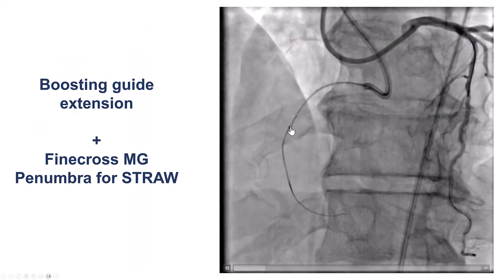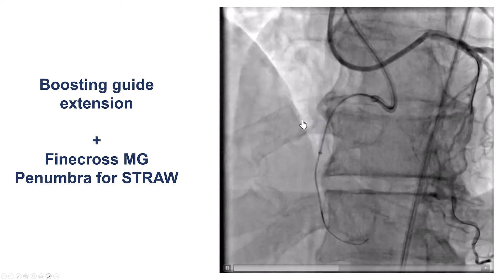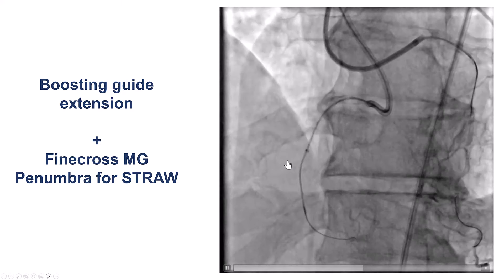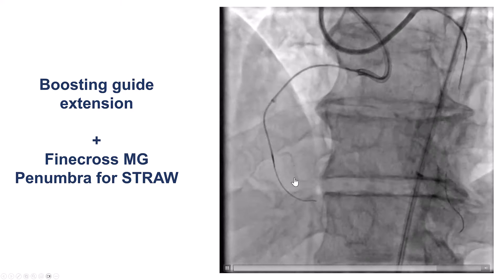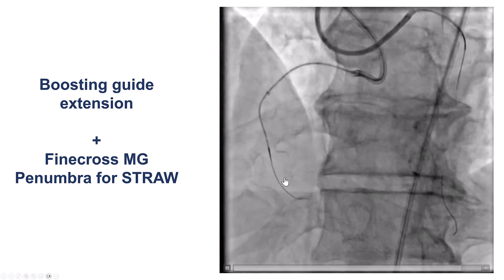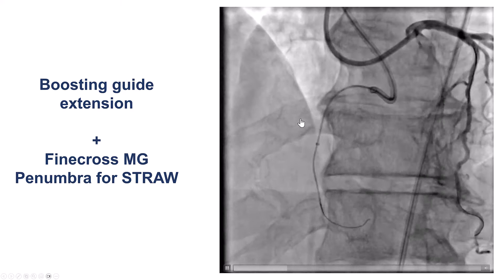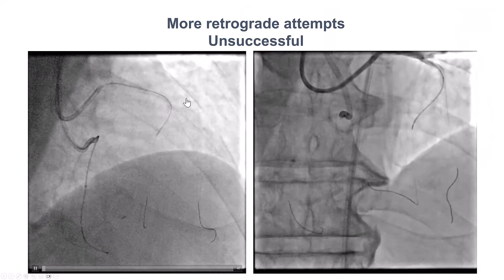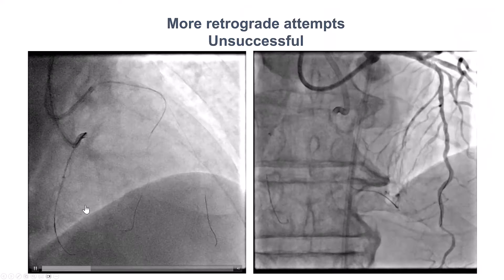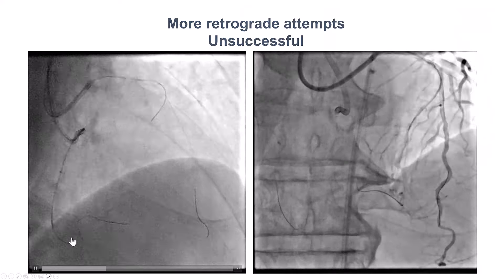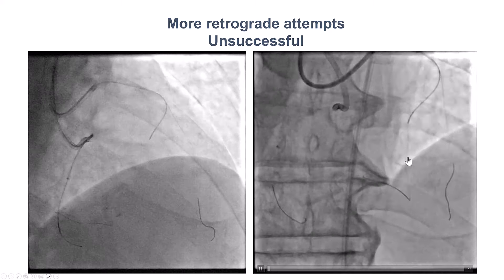He did have a lot of hematoma, so we decided to use a guide extension to try to prevent the expansion of the hematoma. We then did the straw technique both through a microcatheter and also using aspiration through the stingray balloon. Given the trouble we had antegrade with the hematoma, we tried retrograde again.